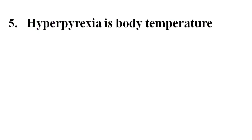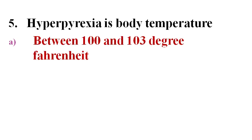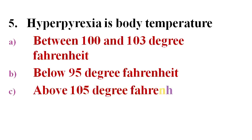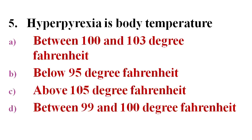Next question: Hyperpyrexia is body temperature? Options A. Between 100 and 103 degree Fahrenheit, B. Below 95 degree Fahrenheit, C. Above 105 degree Fahrenheit, D. Between 99 and 100 degree Fahrenheit.